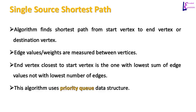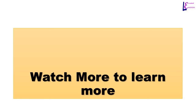If values or weights are assigned to the edges, we can use another algorithm known as single-source shortest path. This algorithm finds the path by measuring the weights assigned to the edges between vertices and uses a priority queue data structure. Since in a priority queue the element with the highest priority is served first, an edge with the lowest value to the destination is served first in single-source shortest path. That's all in this video.